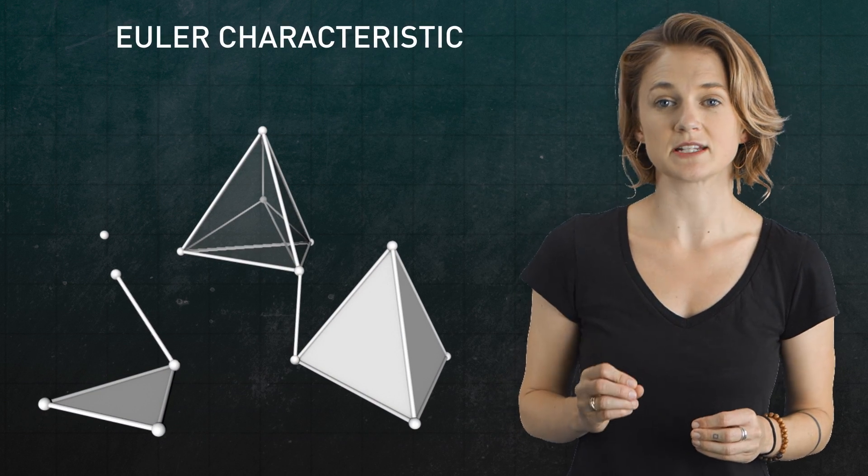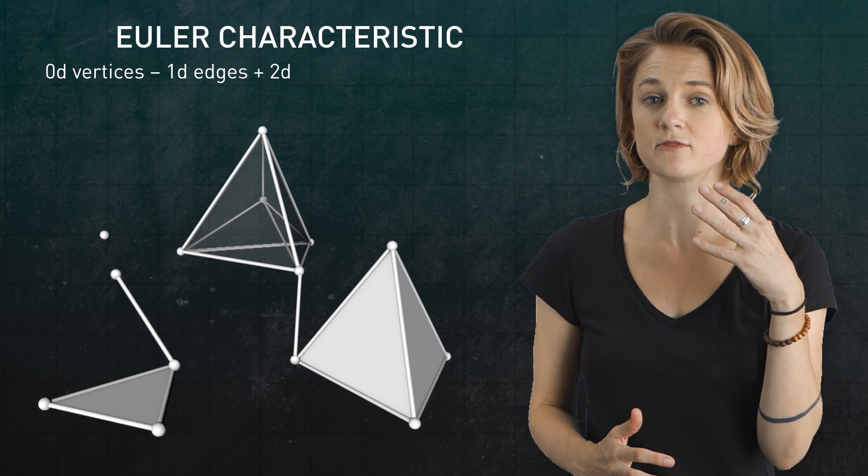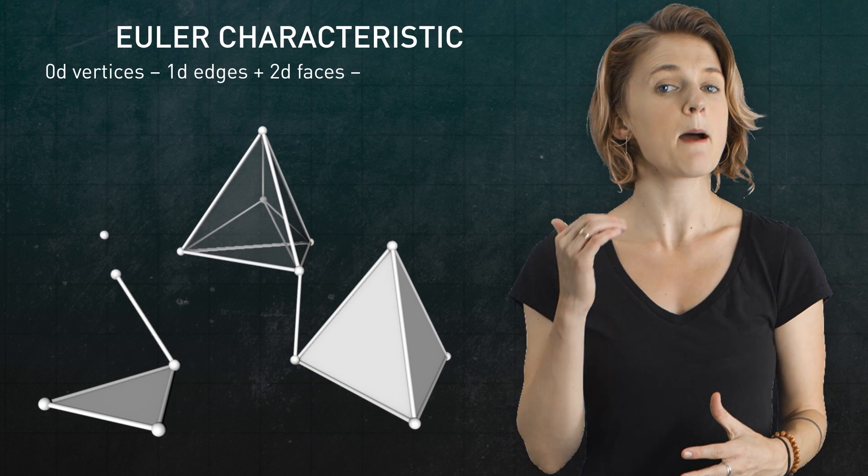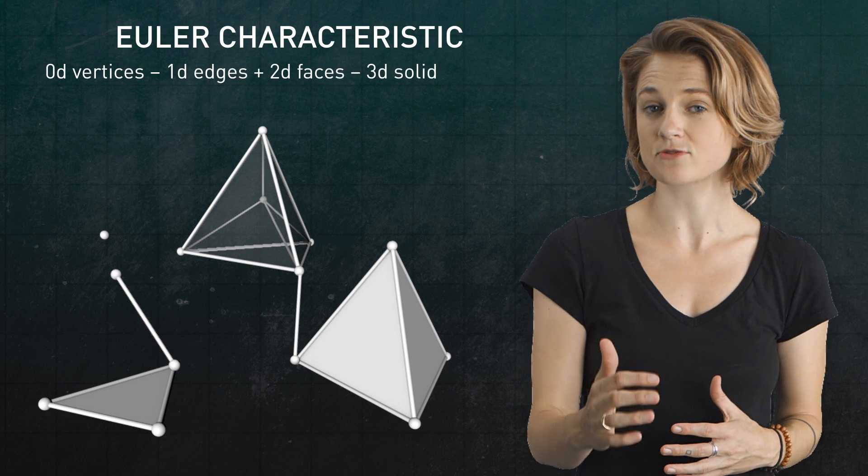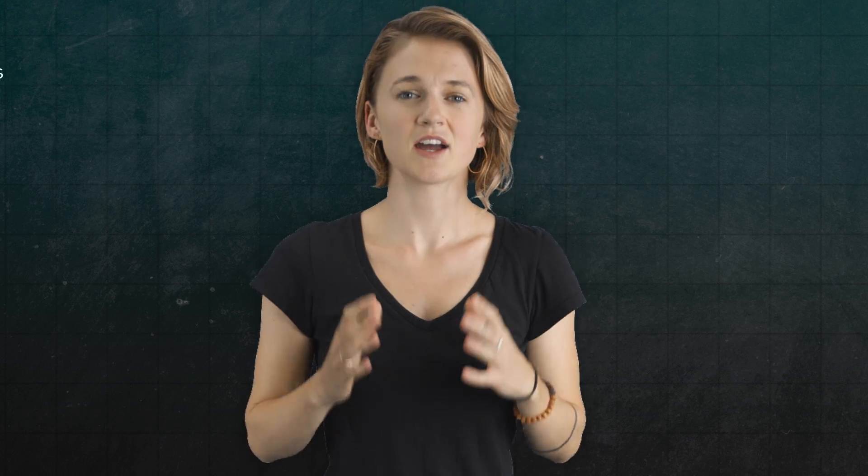the Euler characteristic is the number of zero-dimensional vertices minus the number of one-dimensional edges plus the number of two-dimensional triangular faces minus the number of three-dimensional tetrahedral solids plus the number of four-dimensional spaces. Another important topological invariant